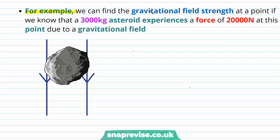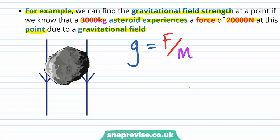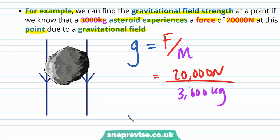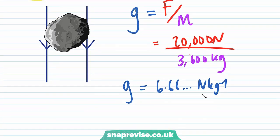For example, we can find the gravitational field strength at a point if we know that a 3,000 kilogram asteroid experiences a force of 20,000 newtons at this point due to a gravitational field. We know that g is equal to the force divided by the mass, and therefore g is equal to 20,000 newtons divided by 3,000 kilograms, which gives us a value for g of 6.67 newtons per kilogram to three significant figures.